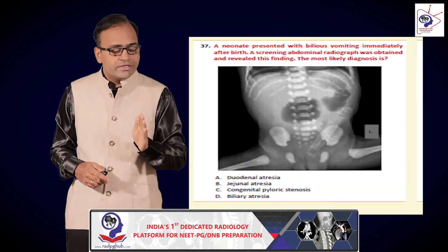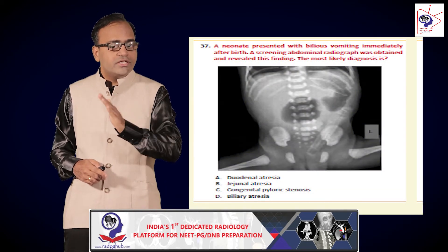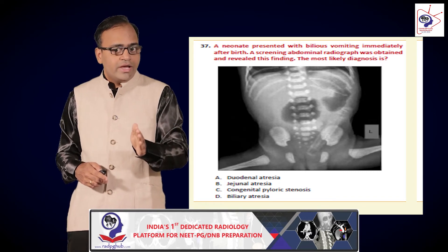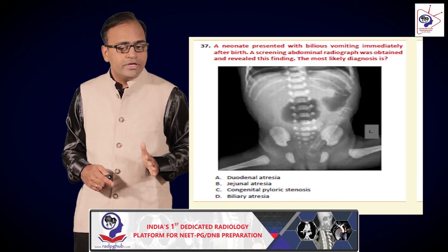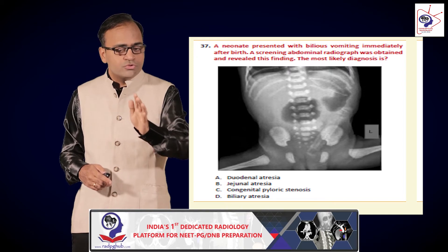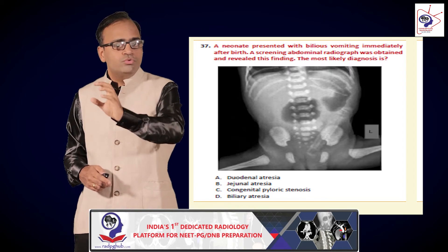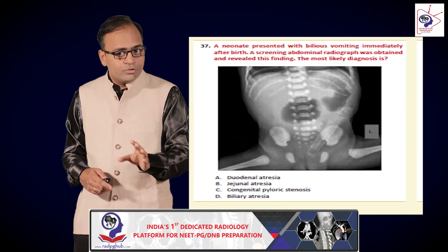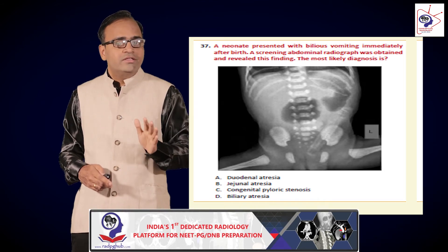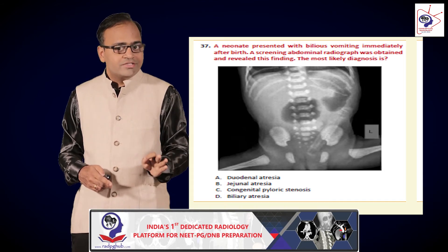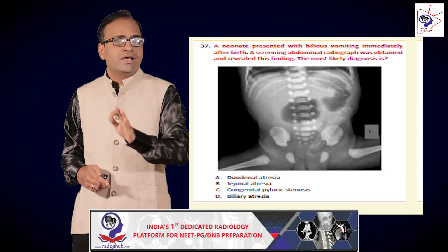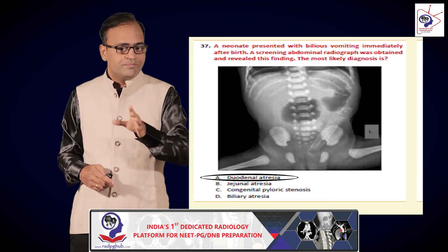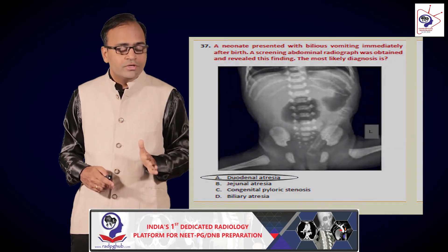A neonate presented immediately after birth with bilious vomiting and this radiograph was obtained. A very specific appearance shows two round oval lucencies in the abdomen — this is the characteristic double bubble sign, which is seen in duodenal atresia. That is the answer to this particular question.